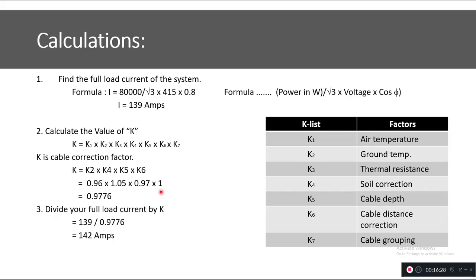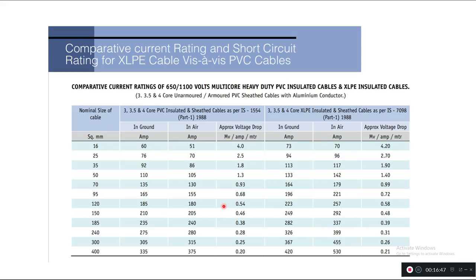The next step is to divide the full load current by K: 139 ÷ 0.9776 = 142 A. This means the cable's minimum current carrying capacity must be at least 142 A. Referring to the cable datasheet for XLPE heavy duty underground cable, the 70 mm² cable carries 164 A and the 95 mm² cable carries 196 A.